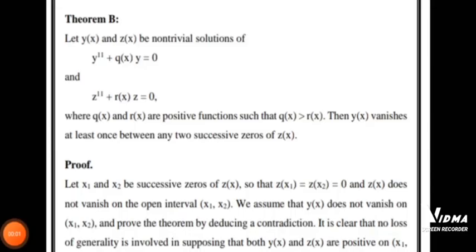Now let us move on to Theorem B. Let y(x) and z(x) be non-trivial solutions of y'' + q(x)y = 0 (equation 1) and z'' + r(x)z = 0 (equation 2) respectively, where q(x) and r(x) are positive functions such that q(x) > r(x). Then y(x) vanishes at least once between any two successive zeros of z(x).